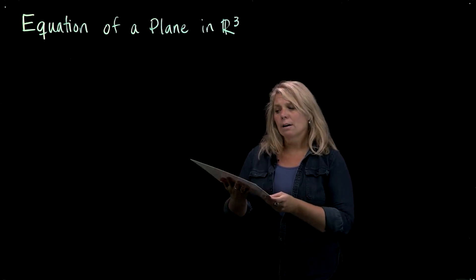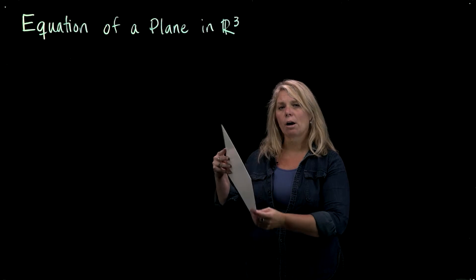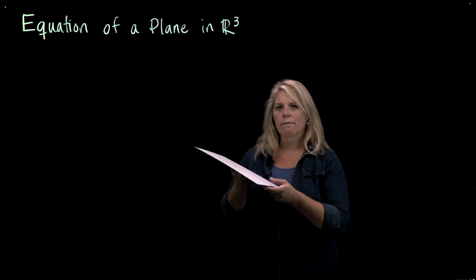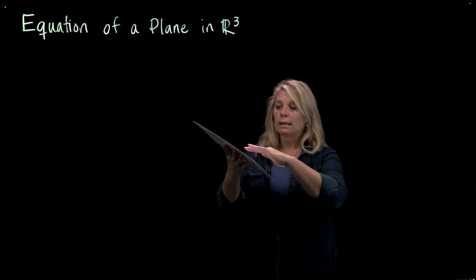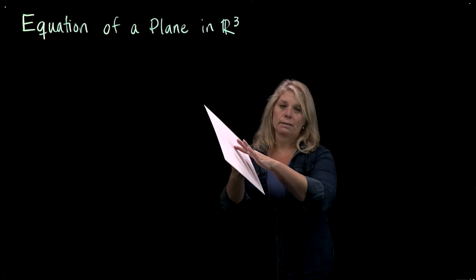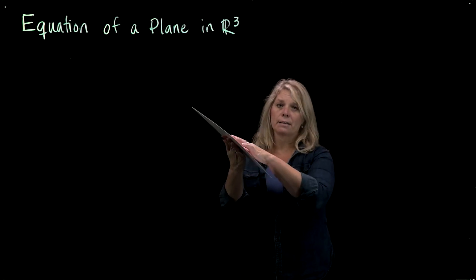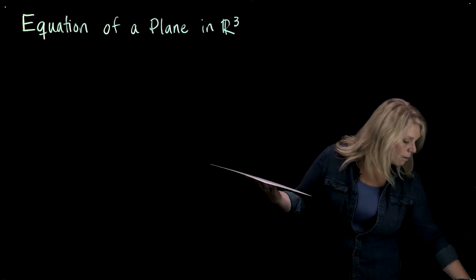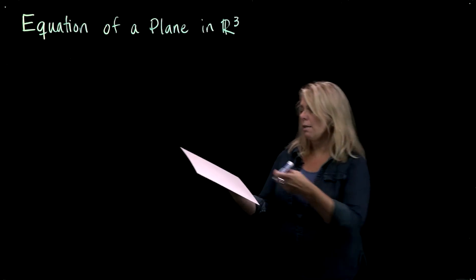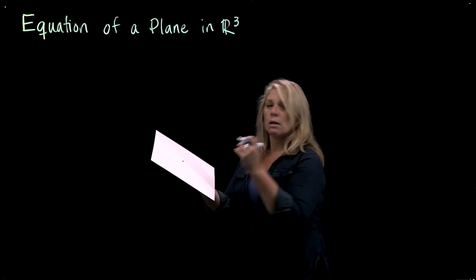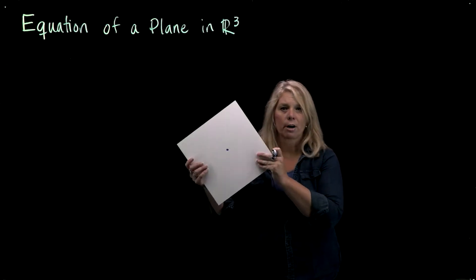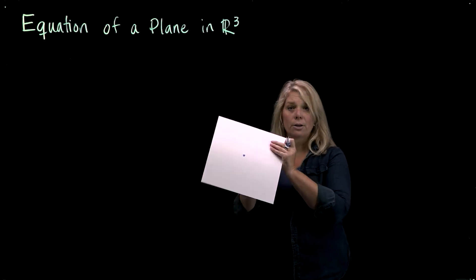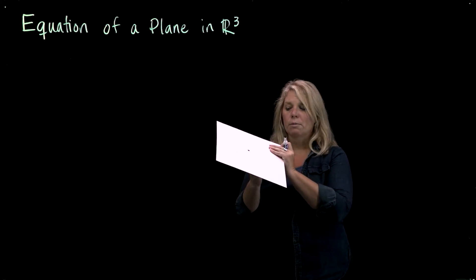There are some things that you would need to know to locate that plane in space. One of them would be at least one point on the plane — that would fix a location for where the plane is. So you need to know at least one point on the plane. I'm going to put a point here on my piece of cardboard and think about that as fixing a location for the plane in space.